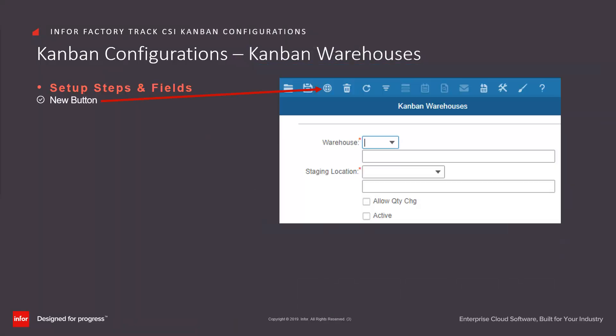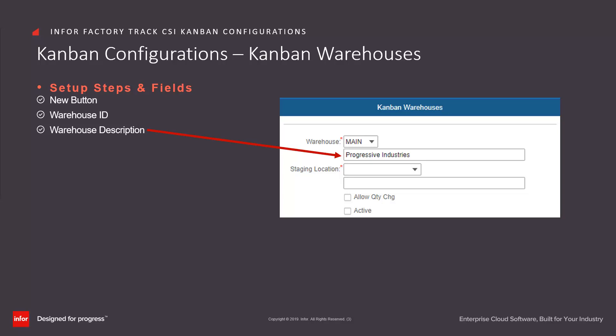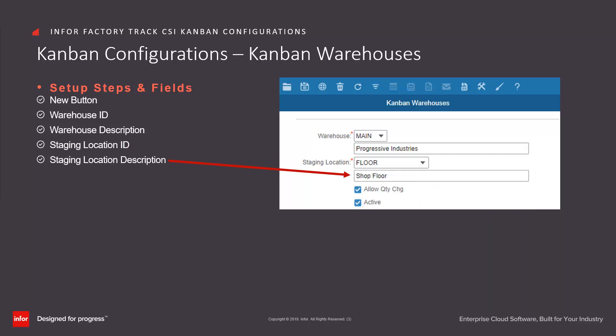To create a Kanban warehouse that supports Kanban items, open the Kanban Warehouse form. Click on the New button. Enter or select from the dropdown the CSI warehouse that will support Kanban processing. Factory Track then populates the warehouse description. Enter or select from the dropdown the CSI staging location ID. Factory Track then populates the staging location description, where Kanban replenishment items from inventory will be staged before being moved to the Kanban location.